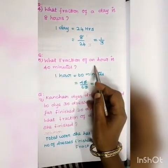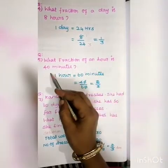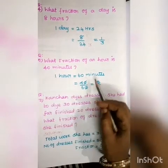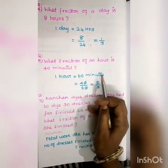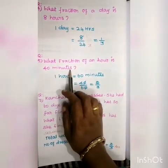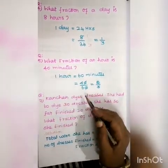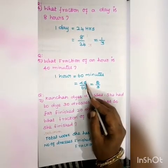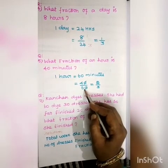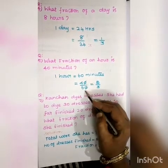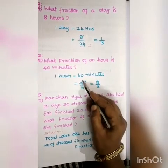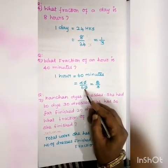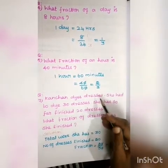Okay, next: what fraction of an hour is 40 minutes? One hour is 60 minutes. So 40 minutes out of 60 minutes gives us 40 divided by 60. We cancel by 2 to get 2 by 3.